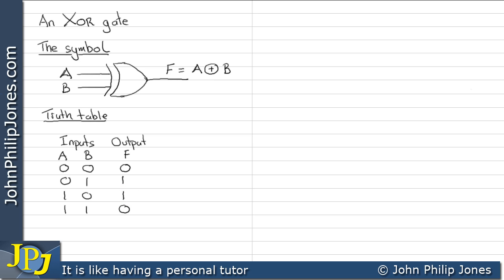Now you may need to remind yourself how to derive the sum of min terms from a truth table, and if that is the case I suggest you look at previous videos on this channel. What I'm going to do now is produce the sum of min terms for the output F taken from the truth table we're looking at here.